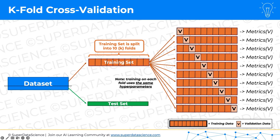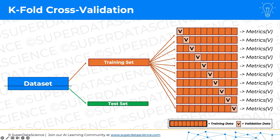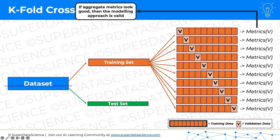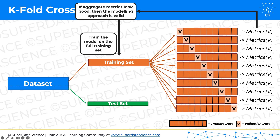We're going to assess these metrics and look at them in aggregate. If these metrics look good in aggregate, then the modeling approach is valid — the model and hyperparameters you've selected are good for this data. Then we're going to train the model one last time on all of the training data, and then test it on the test set as usual. That's our final step.